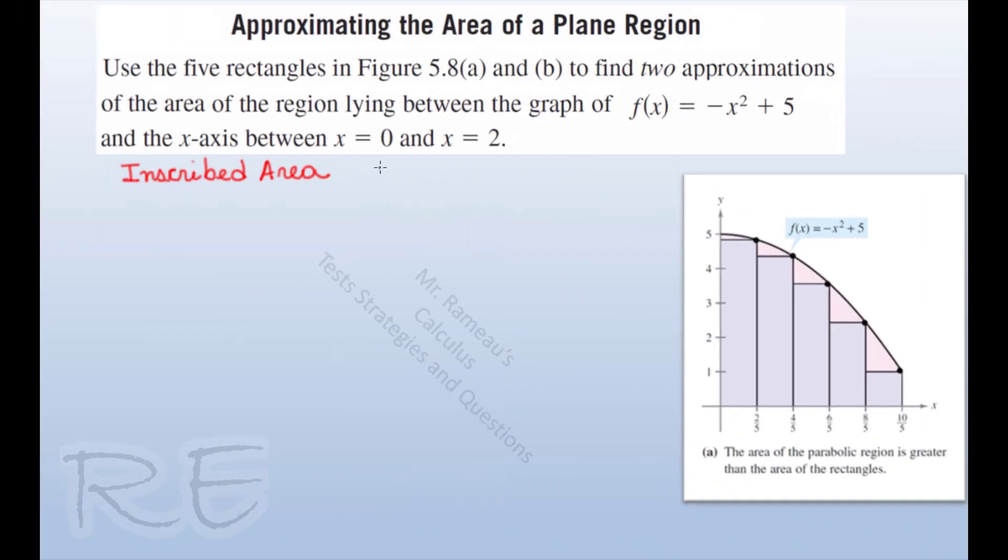To find the area of a rectangle, the formula is length times width. Since all five rectangles have equal width, the approximated area will be L₁ times W plus L₂ times W, plus at the end L₅ times W.